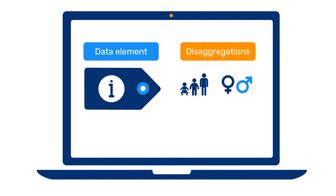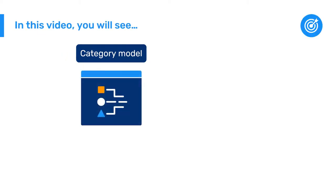These disaggregations are created through the category model in DHIS2. In this video, we will look at the concepts of the category model and show examples of how they relate to the RMN-CAH dataset.